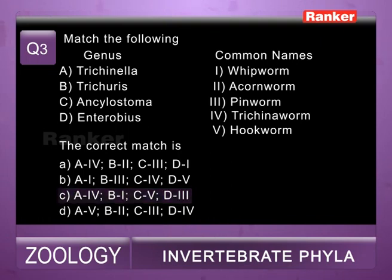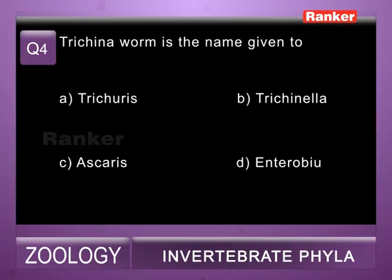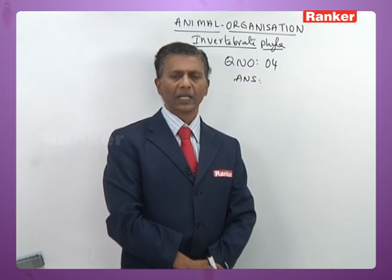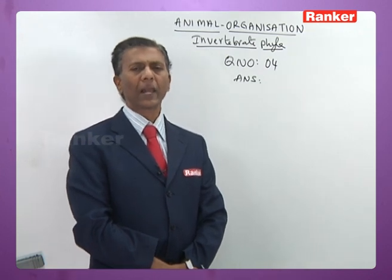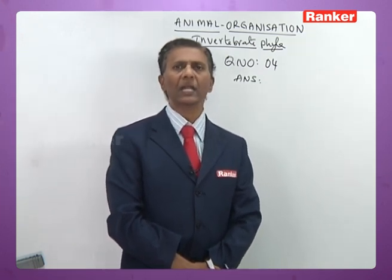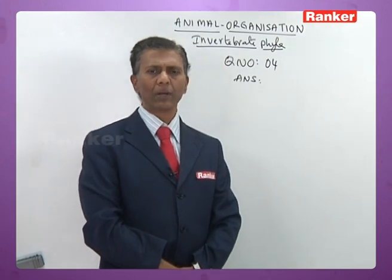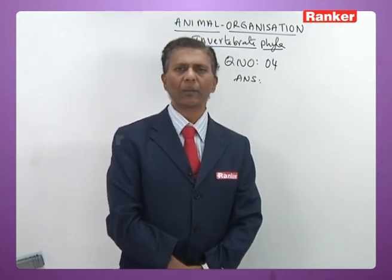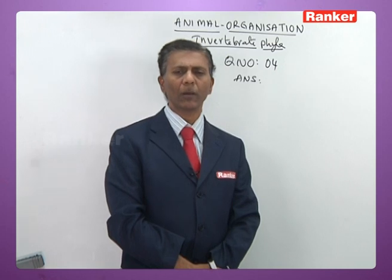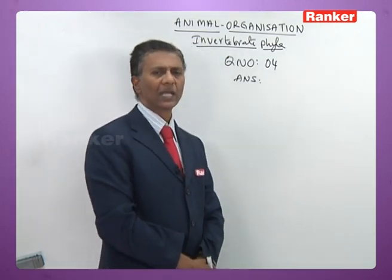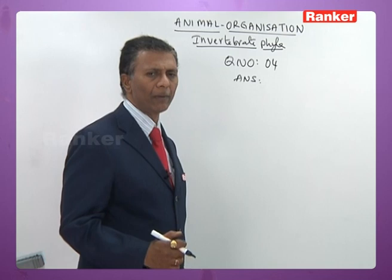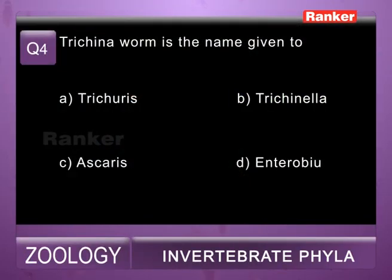Question number three's correct answer is c. Question number four: trichina worm is the name given to — a) Trichuris, b) Trichinella, c) Ascaris, d) Enterobius. Trichuris is whipworm, Trichinella spiralis is trichina worm or garbage worm, Ascaris is roundworm, Enterobius is pinworm. So the correct answer for question four is b) Trichinella spiralis.